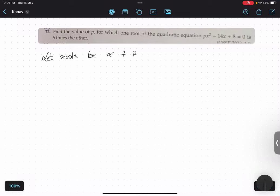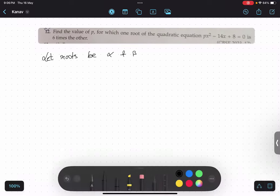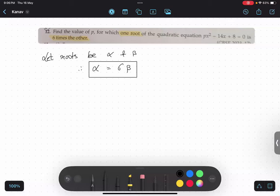Now the last part of the question is saying one root is six times the other. Therefore alpha equals to six times beta.